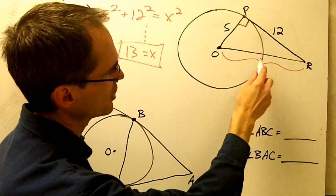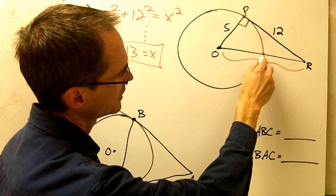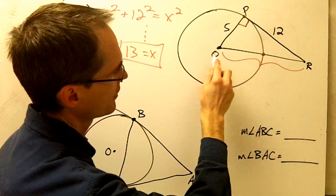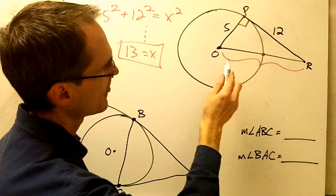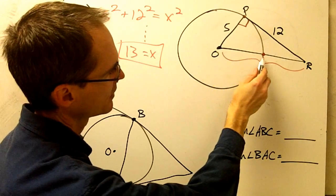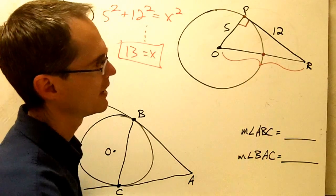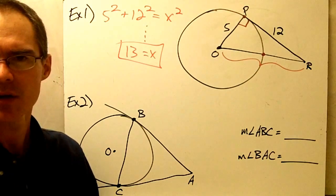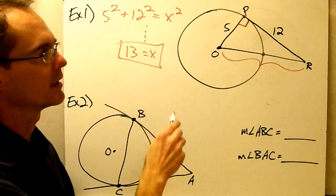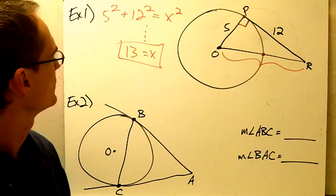Notice I could also, since I know this whole distance here is 13, probably also figure out this distance from here to here and this distance from here to here. I'll let you think about that one for a little bit, and that's going to come up a little bit later in one of the other examples.